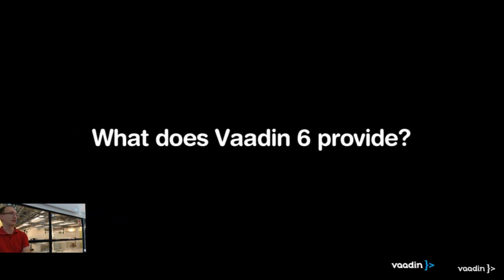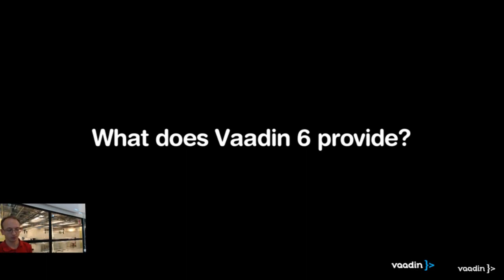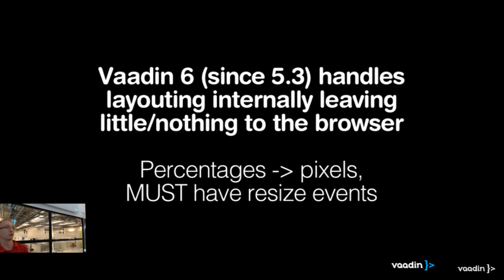For the sake of history, let's say a few words about Vaadin 6. Vaadin 6 has an implementation that tries to solve this problem with certain limitations. Vaadin 6 basically does everything itself — it calculates everything. It doesn't even allow you to put percentages in the DOM, which for some cases is nice, but for styling it's really not nice when there are pixels everywhere.